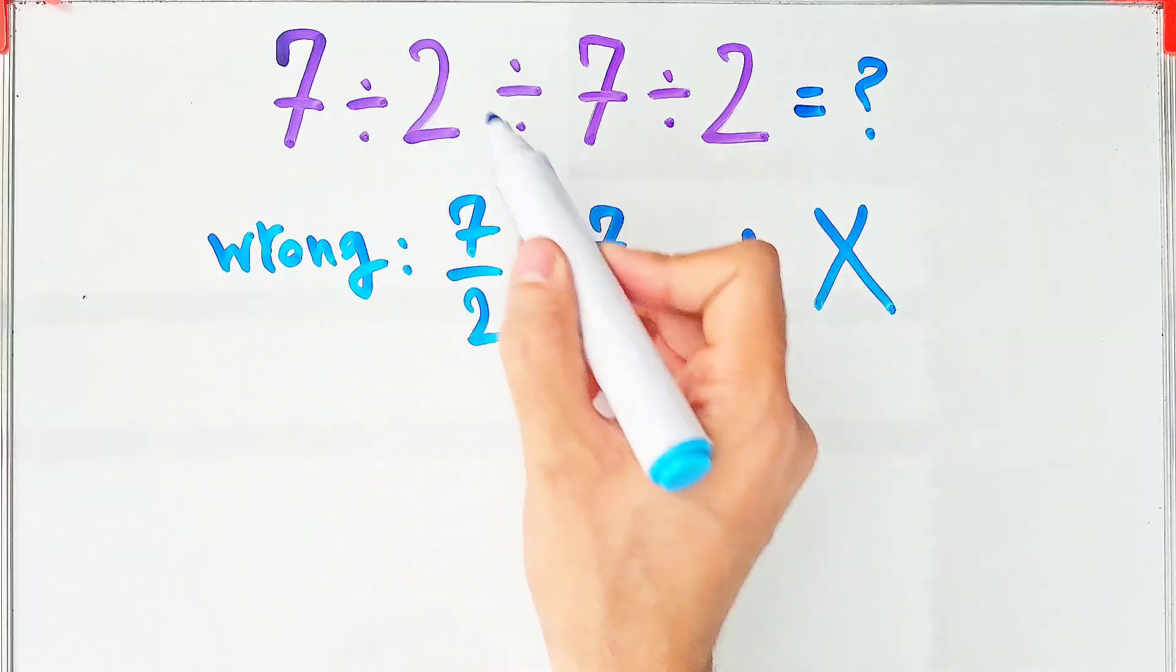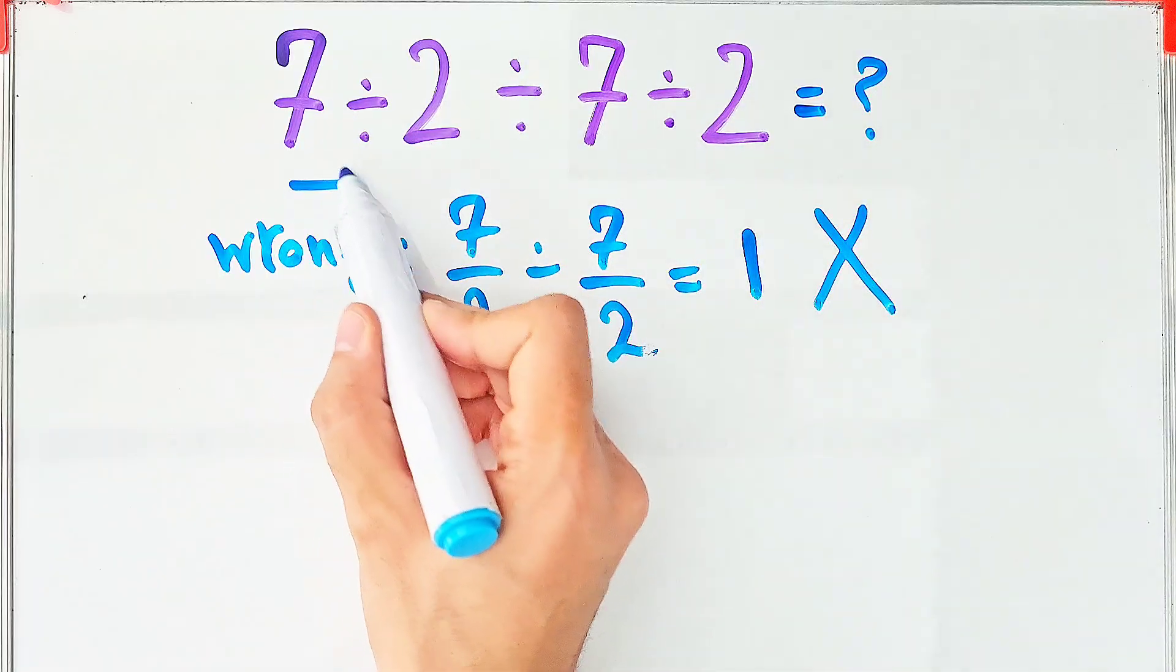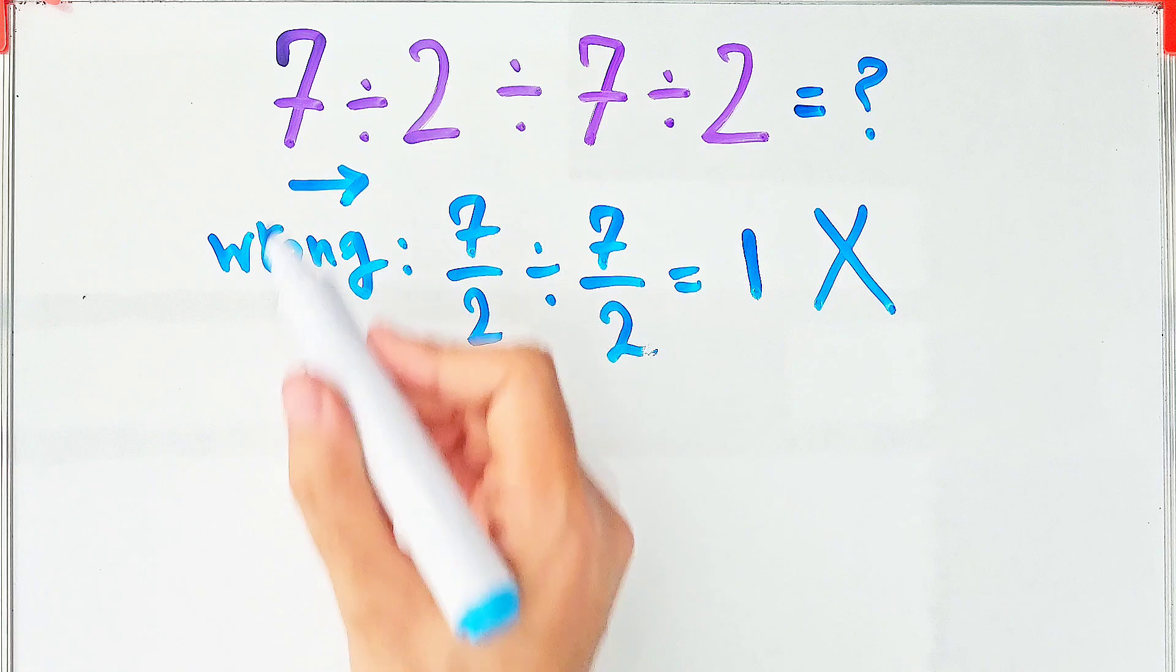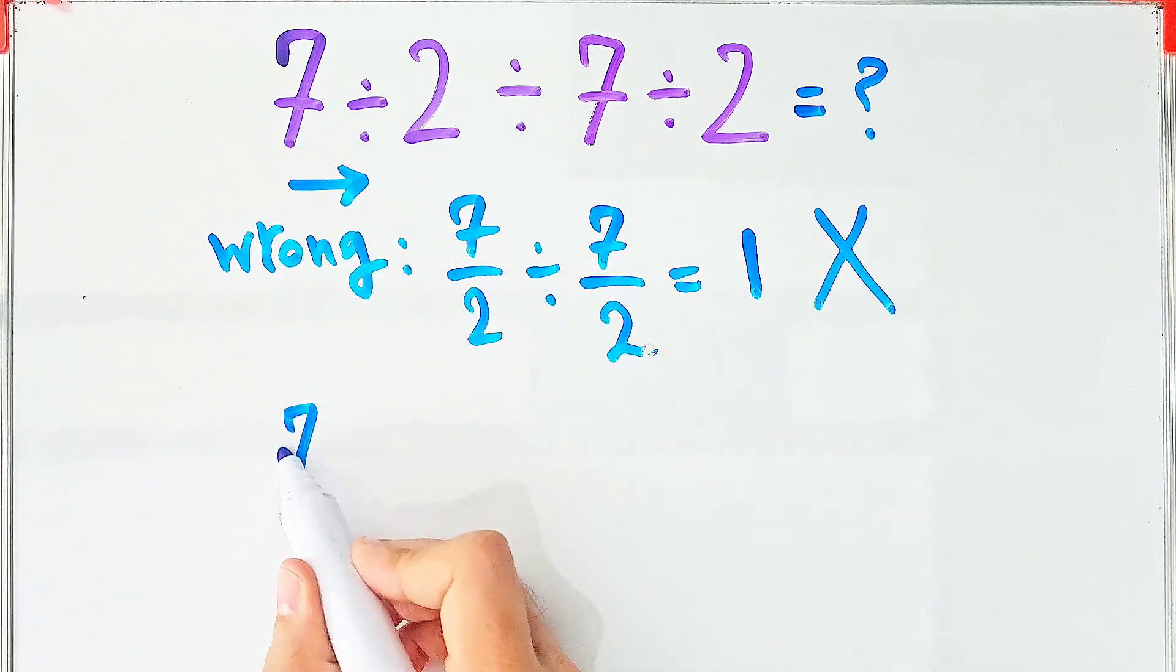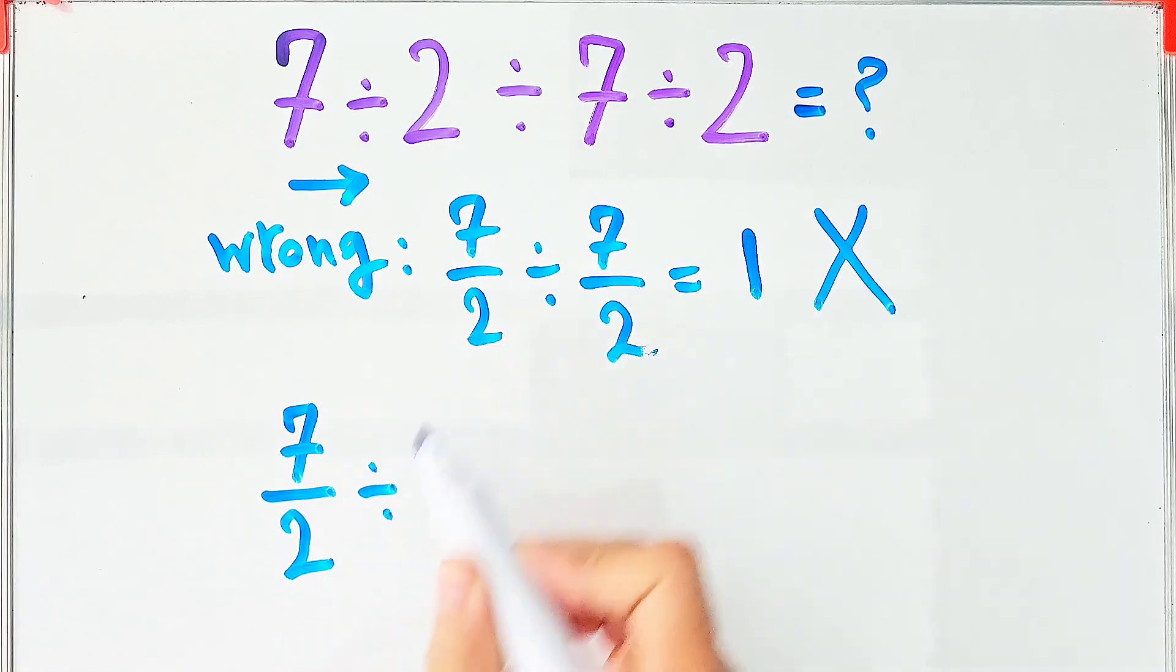Let's solve it step by step together. Because we have 3 divisions, we start from the left and simplify the question. 7 divided by 2 equals 7 over 2, then divided by 7, then divided by 2.